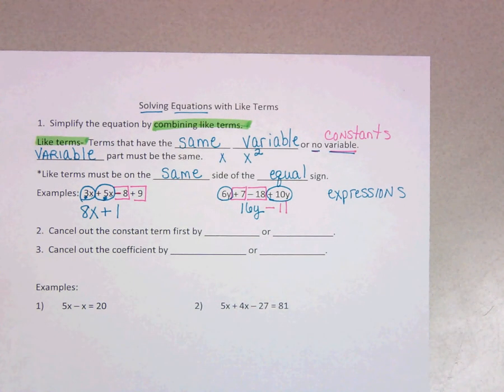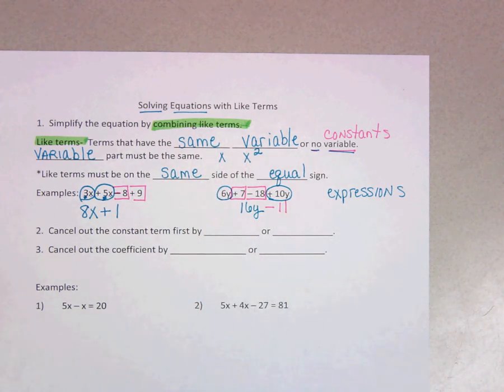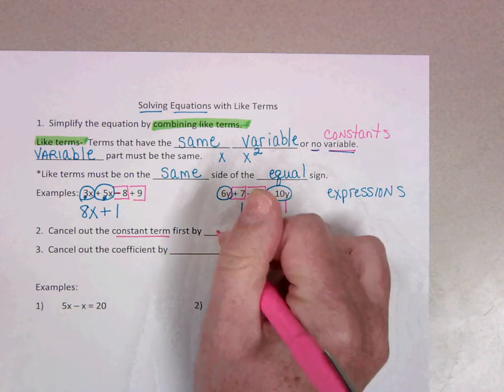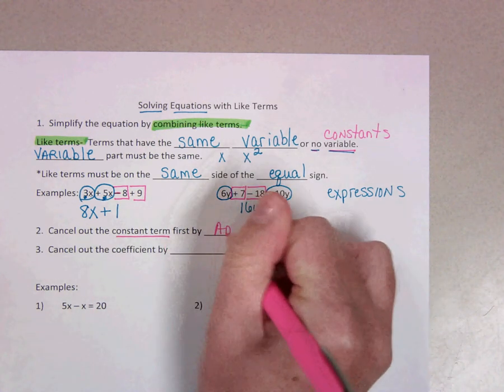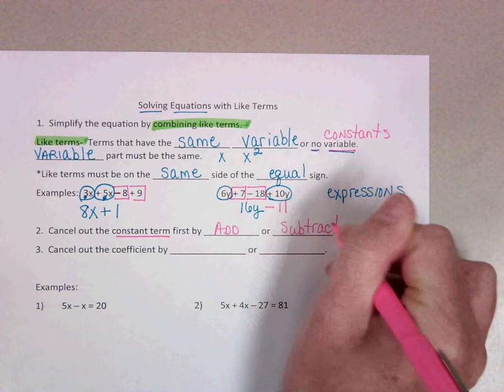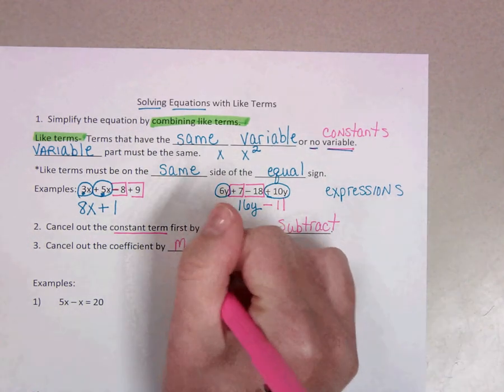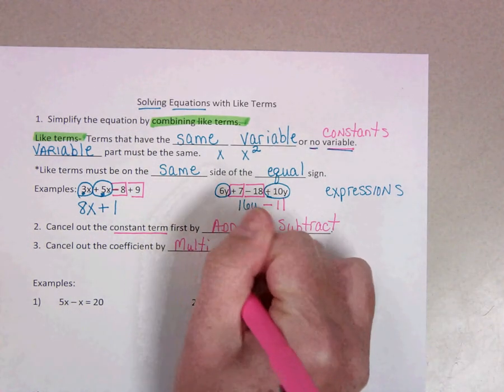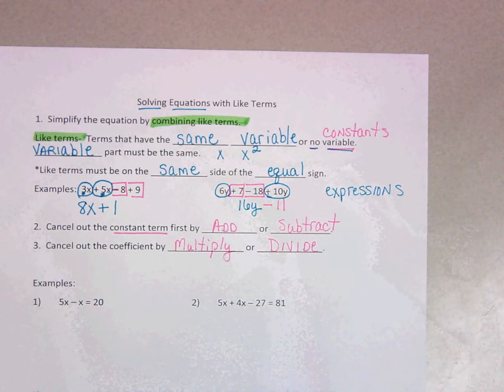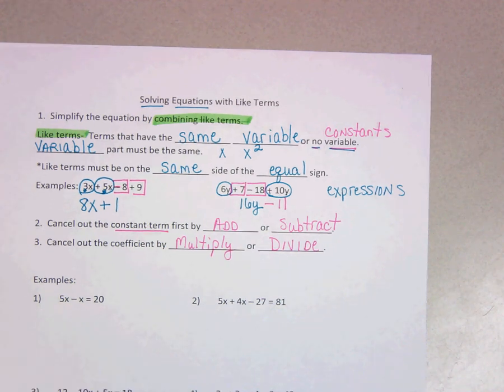Now when we're solving our equations, once we've simplified it by combining like terms, remember our next step is to cancel out the constant term by adding or subtracting. And then remember, we cancel out the coefficient by multiplying or dividing. So these last two steps are what we already looked at with two-step equations. So let's work through some of these equations together.